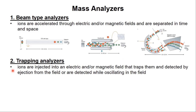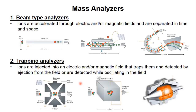The other type of general mass analyzer is trapping analyzers. These are analyzers in which ions are injected into an electric or magnetic field, and those fields trap the ions. They will then be detected by ejection from the field that's trapping them, or they might be detected while they are oscillating in that field. There are three different types: the quadrupole ion trap, the Fourier transform ion cyclotron resonance mass analyzer or FTICR, and the orbit trap.